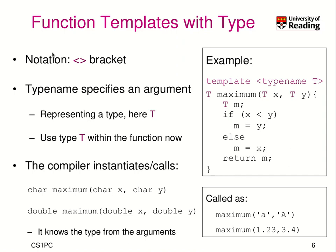So how can we create a function template? We have to use angle brackets for specifying a template. Here we have a function 'maximum' which takes two arguments x and y of type T, and this function also returns type T. T is defined by what we call a 'typename', so I declare a template that uses a type T. T is not known when I declare the template — it could be integer, it could be double. Whatever it is, all the T's become that data type. So we create a temporary variable of type T called m, and if x is smaller than y, m shall be y, otherwise m shall be x. Lastly, we return m.